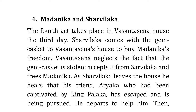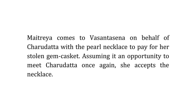Act 4: Madanika and Sharvilaka. The fourth act takes place in Vasantsena's house on the third day. Sharvilaka comes with the gem casket to buy Madanika's freedom. Vasantsena overlooks the fact that the casket is stolen and accepts it, freeing Madanika. As Sharvilaka leaves, he hears that his friend Aryaka, captivated by King Palaka, has escaped and is being pursued. He departs to help him. After a while, Maitreya comes to Vasantsena on behalf of Charudatta with the pearl necklace to pay for the stolen casket. Seeing it as an opportunity to meet Charudatta again, she accepts the necklace.